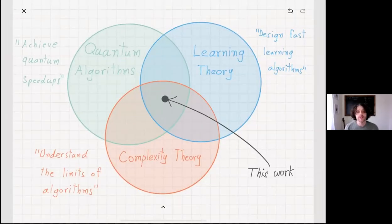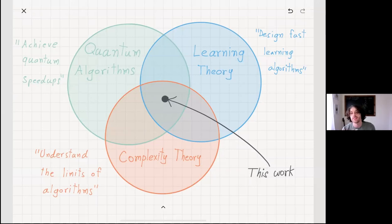To me, this was quite surprising. This work falls in the intersection of three different fields and somehow ties them in a very natural way. These three fields are quantum algorithms, where the main goal perhaps is to achieve quantum speed-ups, learning theory, the theoretical foundations of machine learning where we want to design fast and efficient learning algorithms, and complexity theory, which is concerned with understanding the limits of computation and algorithms. We see how these three topics are very tightly connected.